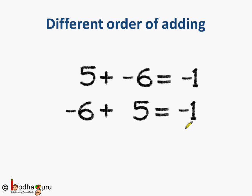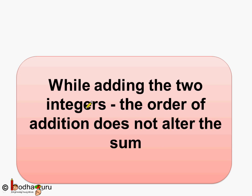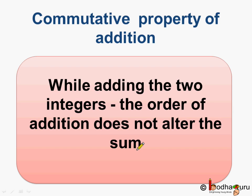What do we see? In both the cases the answer is minus 1. So changing the order of addition does not make any difference in case of integers: 5 plus minus 6 equals minus 6 plus 5, which equals minus 1. So we can say while adding two integers, the order of addition does not alter the sum. This is called the commutative property of addition, which holds true in case of integers.